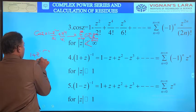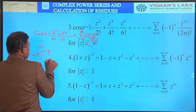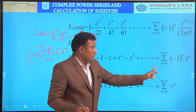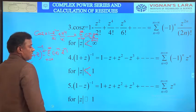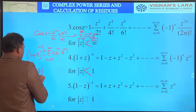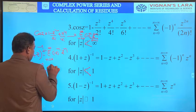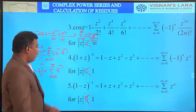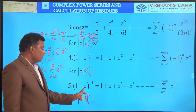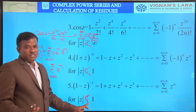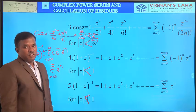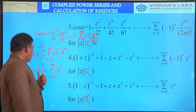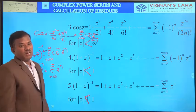The fourth and fifth expansions are very useful in solving problems. Fourth: (1+z)^(-1) equals sigma n=0 to infinity (-1)^n z^n, i.e., 1 - z + z² - z³ + ..., valid when |z| < 1. Fifth: (1-z)^(-1) equals sigma n=0 to infinity z^n, i.e., 1 + z + z² + z³ + ..., also valid when |z| < 1. Note that e^z, sin z, cos z are all valid when |z| < infinity.